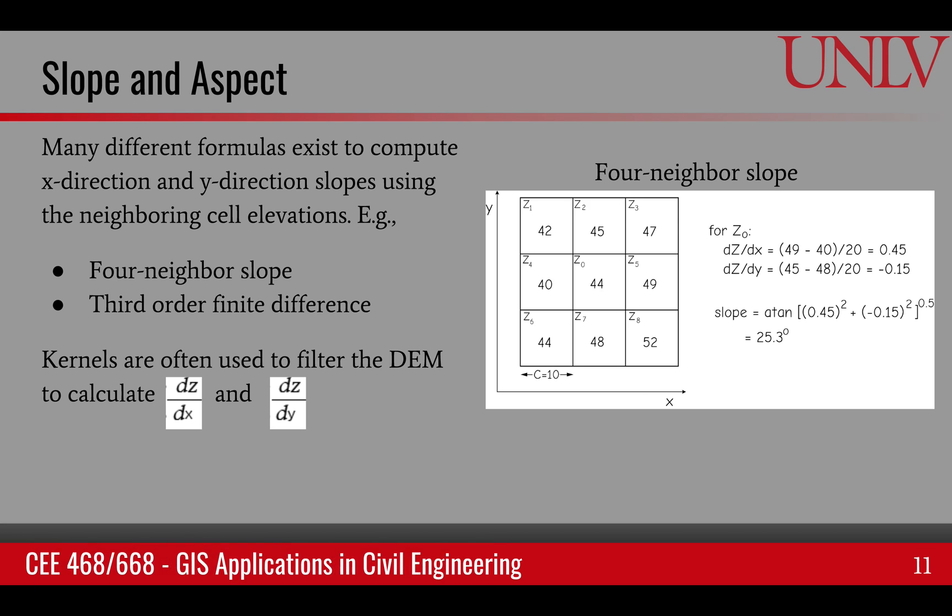There are many different formulas that exist to compute the dz/dx and dz/dy, and once we have those two values, then we can find slope and aspect. The two methods that we commonly use are called four-neighbor slope and the third-order finite difference slope.